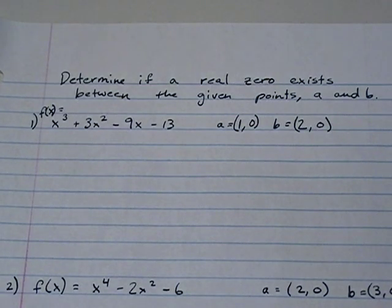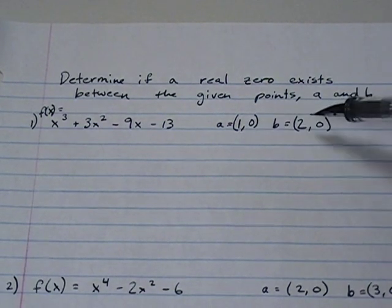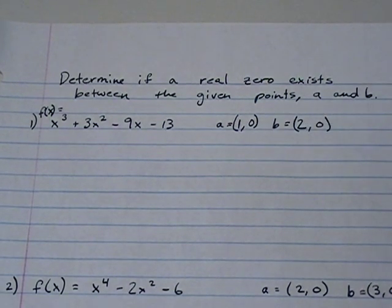Today we have been asked to determine if a real zero exists between the given points a and b. So for our first question, we have three questions. For our first question, f of x equals x cubed plus 3x squared minus 9x minus 13. Point a is 1 on the x axis, point b is 2 on the x axis.